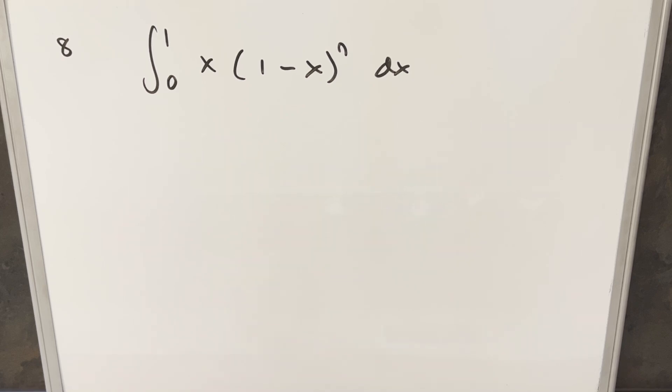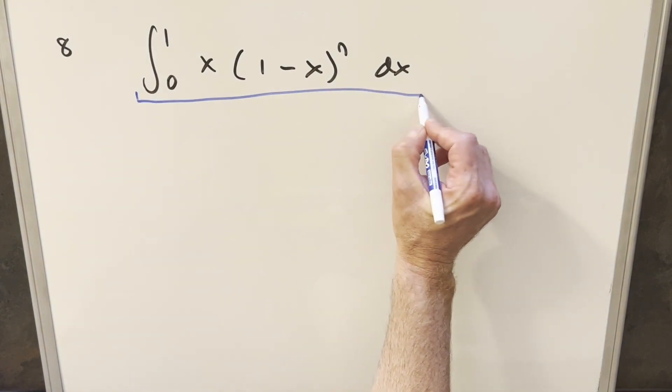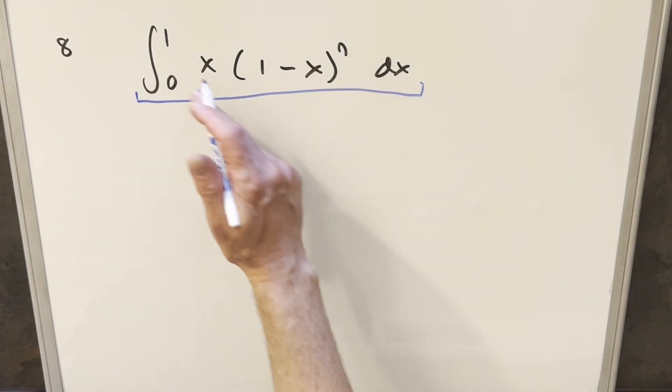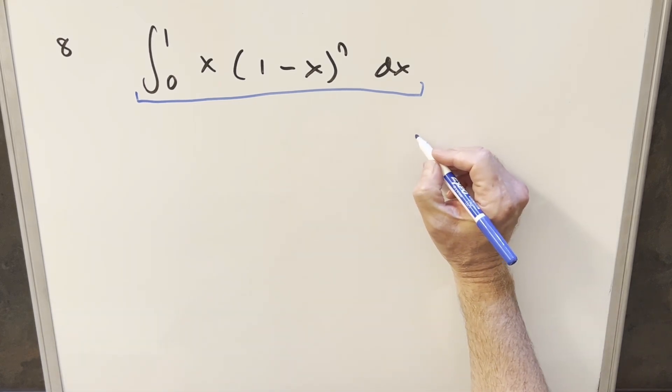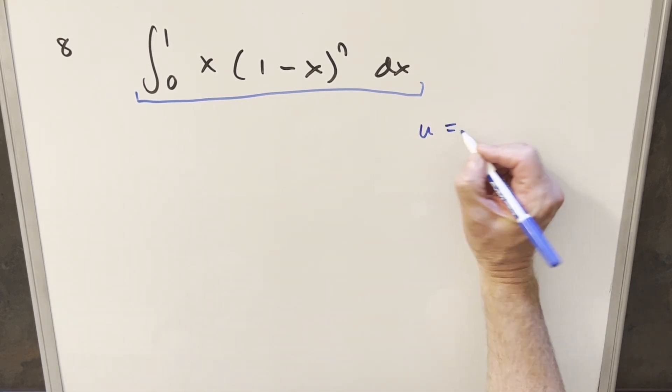Now you may notice that this thing right here is set up exactly for us to use the beta function. It's in the exact form, exact right bounds, but it's also in pretty good shape to do a u substitution. Now, I have no idea which one's better. I probably prefer beta function, so therefore let's do the u substitution.